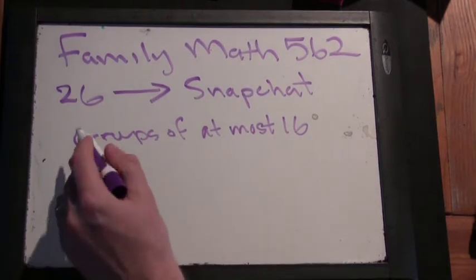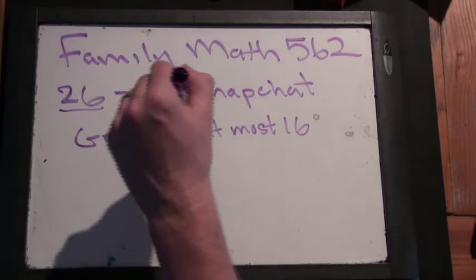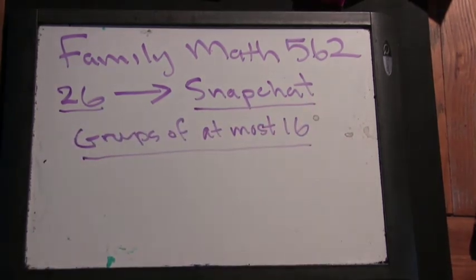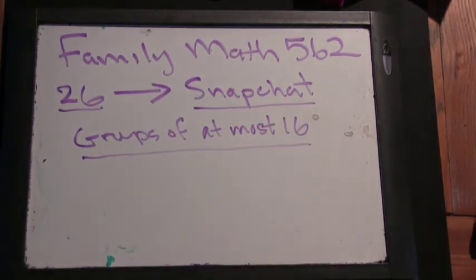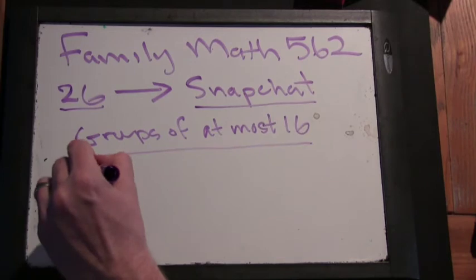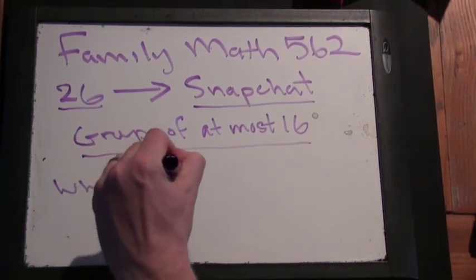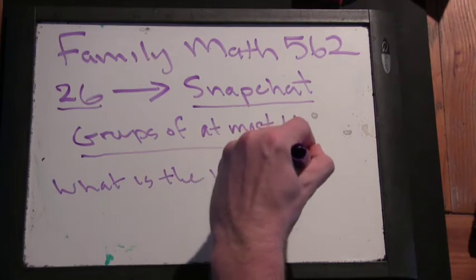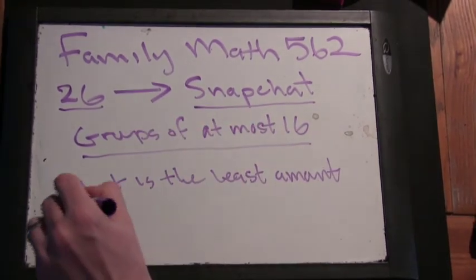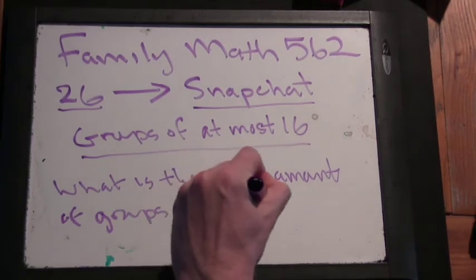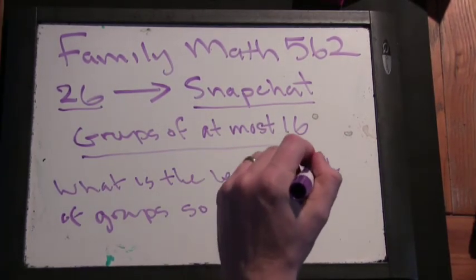So they want to have all 26 people together on Snapchat, but Snapchat only lets you have groups of at most 16. Each person wants to be able to talk to the other 25 people. So the question is, what's the least amount of groups so that everyone's in a group with everyone else?